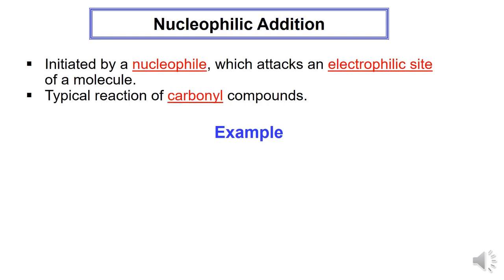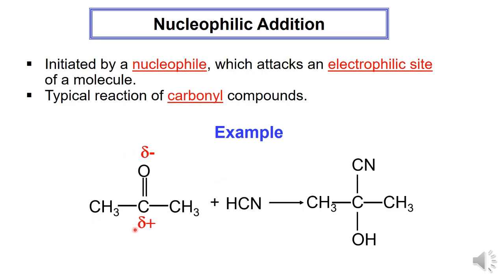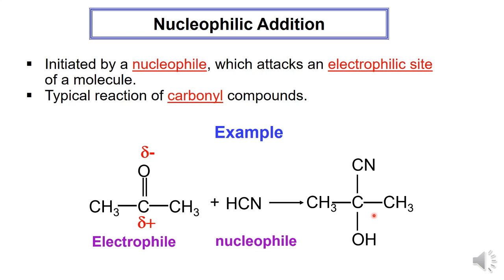Nucleophilic addition is initiated by a nucleophile which attacks an electrophilic site of a molecule. This is a typical reaction of carbonyl compounds. Example: A carbonyl compound, acting as an electrophilic site, reacts with HCN. HCN is the nucleophile that attacks the electrophilic site, and the product formed has CN and OH added to the carbonyl compound.